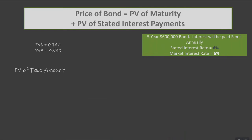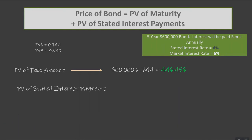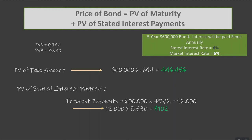Looking at the present value of our face amount — or maturity amount, those terms are synonymous — we take the $600,000 of the bond times 0.7744, which gives us $446,456. To determine the present value of our stated interest payments, we first calculate the actual interest payment: $600,000 times our four percent stated interest rate divided by two equals $12,000. So every six months the investor would get a $12,000 interest payment. The present value of those payments is $12,000 times the annuity factor of 8.530, which gives us $102,362. Adding these two values together, the total present value of our bond is $548,818.